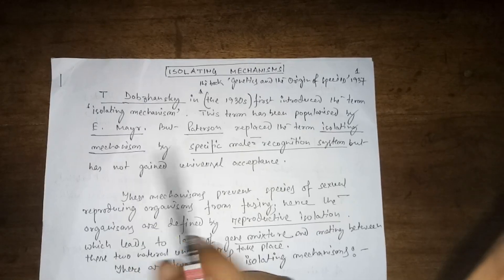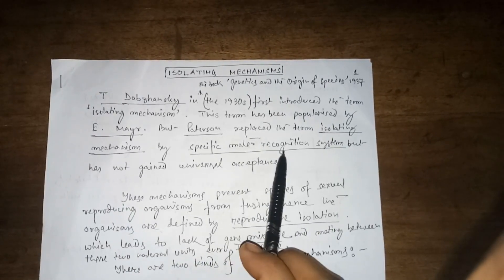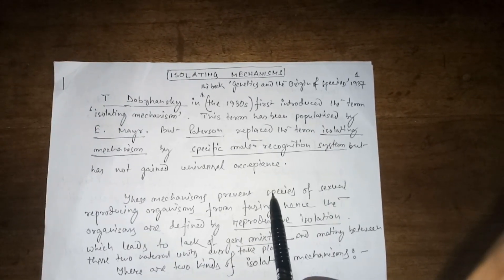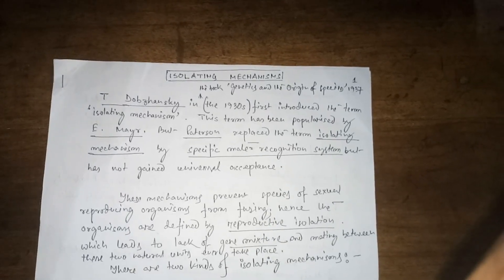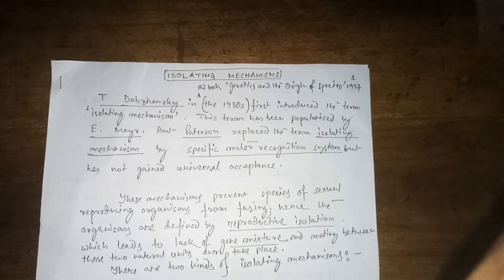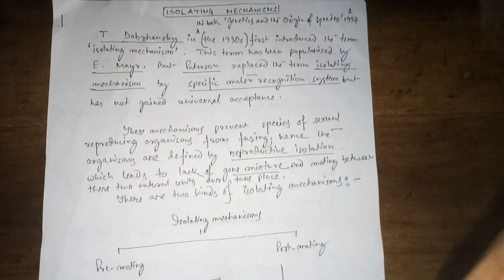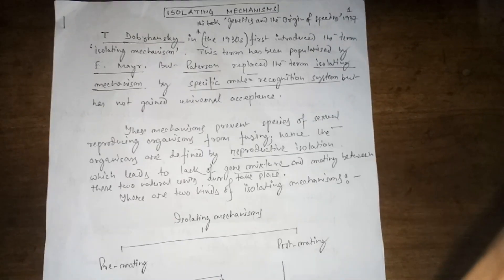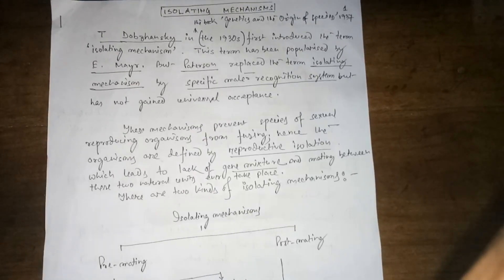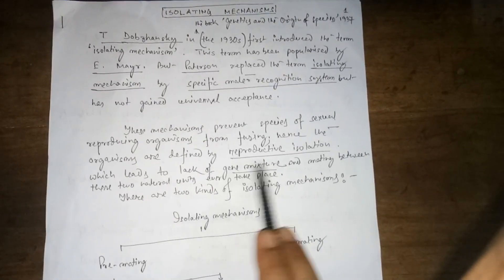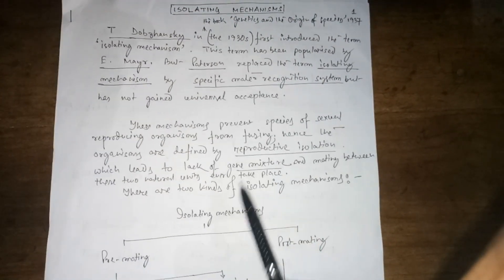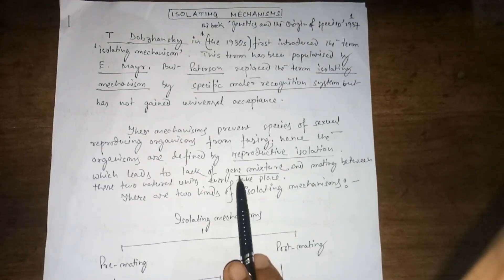The term 'specific mate recognition system' has not gained universal acceptance. These mechanisms prevent species of sexually reproducing organisms from fusing. Hence, the organisms are defined by reproductive isolation, which leads to a lack of gene mixture and mating between these two natural units.